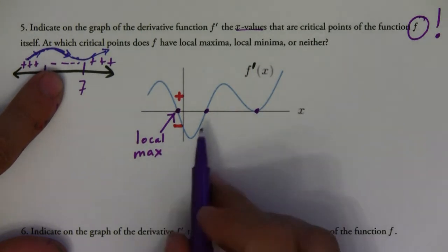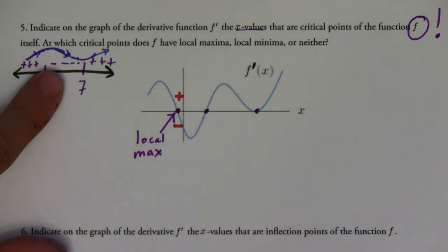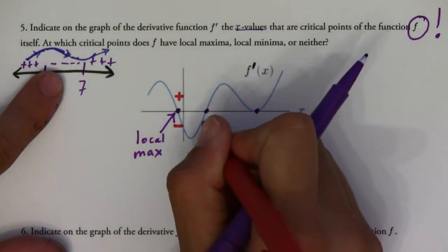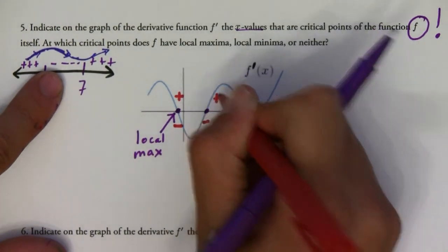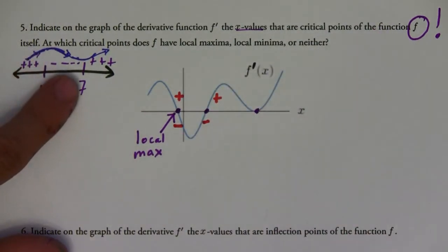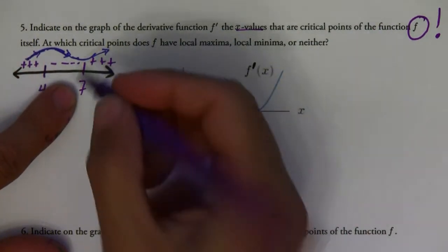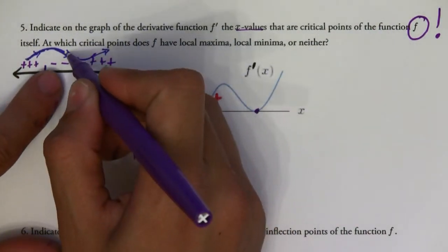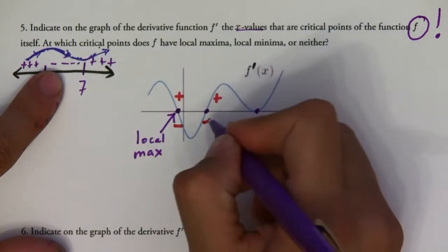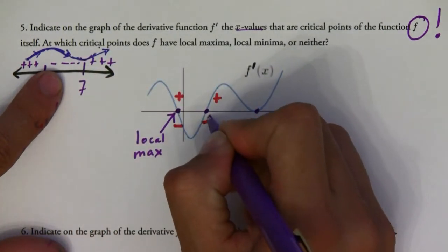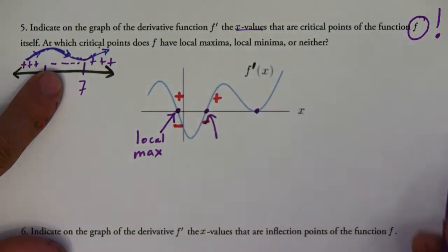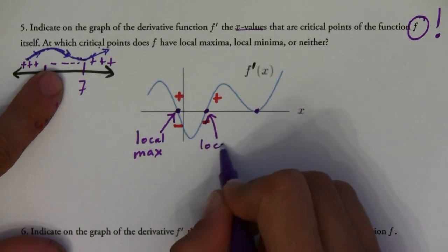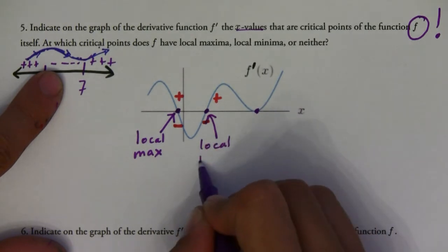Now let's make the connection here: the derivative is negative and then it becomes positive. That's like the situation at seven, where it's decreasing and then increasing. That means this value is going to be a local minimum.